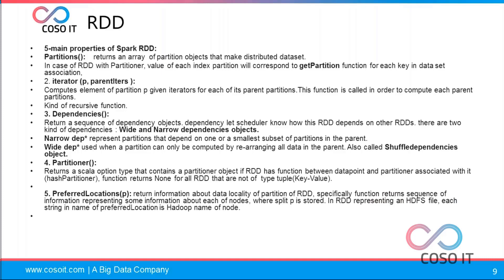The fifth and last property is preferred location. Preferred location refers to data locality — which node a particular partition of the RDD is stored on. The function returns a sequence of information representing the node where each split is stored for an RDD representing an HDFS file. Each string — the name of the preferred location — is the Hadoop node name in an encrypted format. When this function is called, it returns that particular node name along with its associated partition.